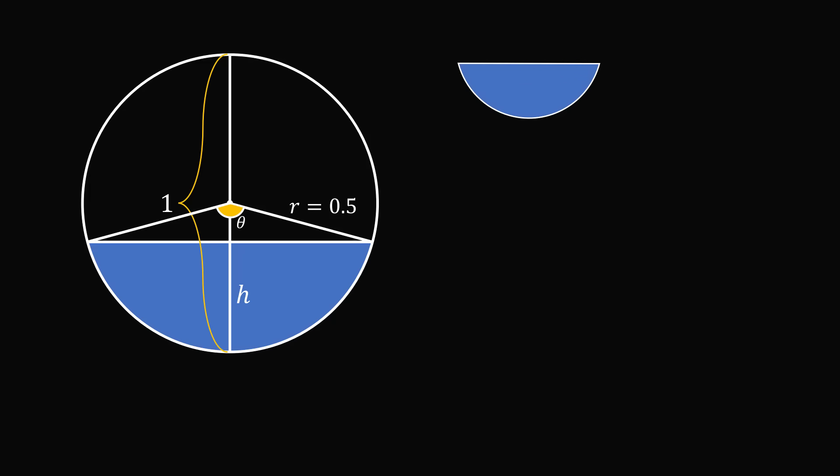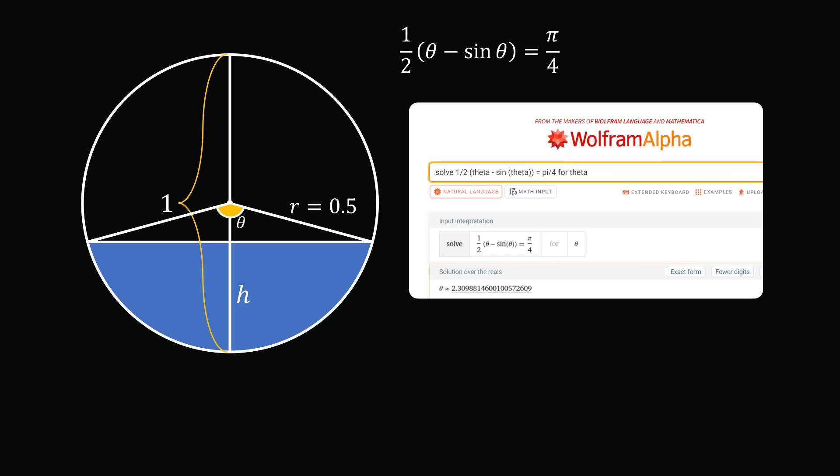We can solve for the area of the circular segment using the formula we derived earlier. We want this to be equal to 1 quarter of the circle's area. The circle's area is pi r squared, so we set this equal to pi r squared divided by 4. The r squared terms will cancel on both sides, and we now have an equation in just the variable theta. 1 half multiplied by the quantity, theta minus sine theta is equal to pi over 4. We won't be able to get a closed form or exact value for this, so we will go ahead and use a numerical solver. We get that theta is approximately equal to 2.3099.